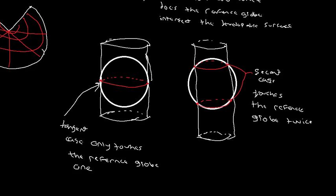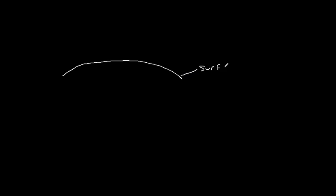What I want to do is take this example with the tangent case and the secant case and blow them up a little bit. I want you to think of this arc as the Earth's surface — as the surface of the reference globe. So this is the surface of the reference globe.